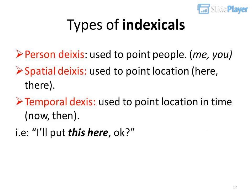Types of indexicals: Person deixis — used to point to people: me, you. Spatial deixis — used to point to location: here, there. Temporal deixis — used to point to location in time: now, then. For example: 'I'll put this here.'